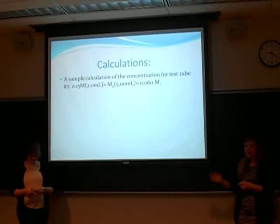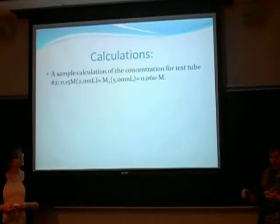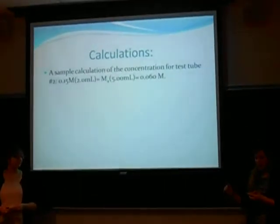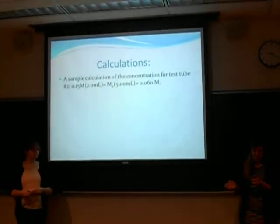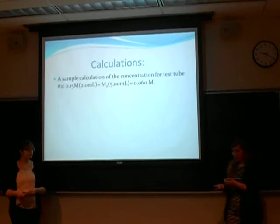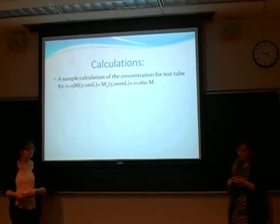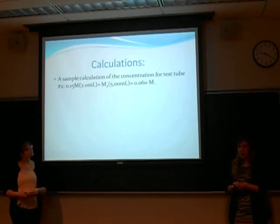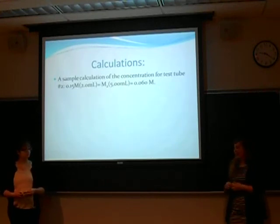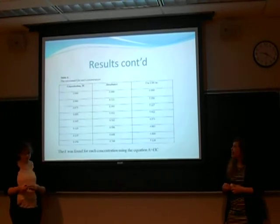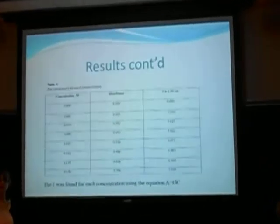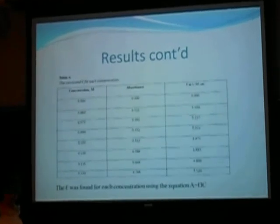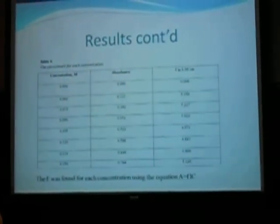The formula used to determine the concentrations of the cobalt chloride solutions was m1v1 equals m2v2, which is the molarity of the first times the volume of the first equals the molarity of the second times the volume of the second. An example of this would be tube number two, which was determined to be 0.15 molar times two milliliters equals m2 times five milliliters, giving a value of 0.0604. Table four shows the concentration and absorbance values as well as the E-values of each concentration using the equation A equals ELC.